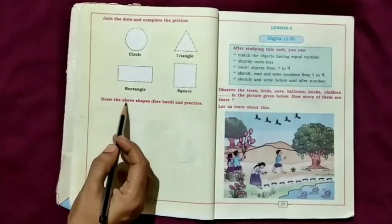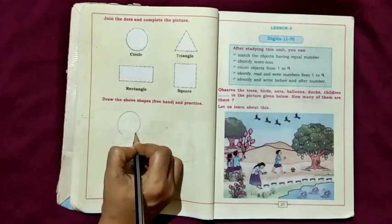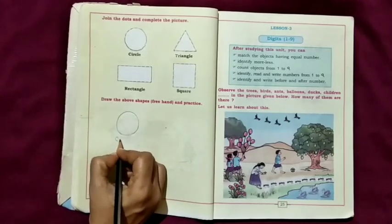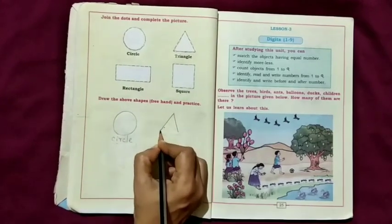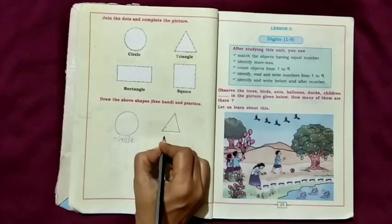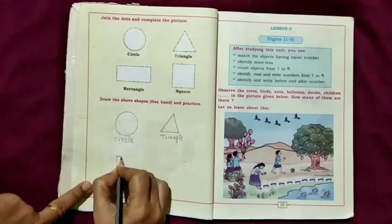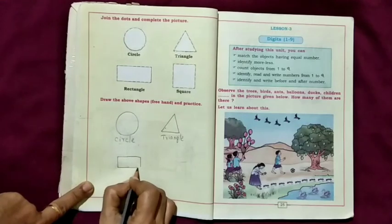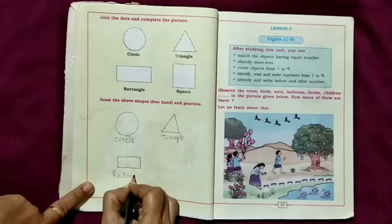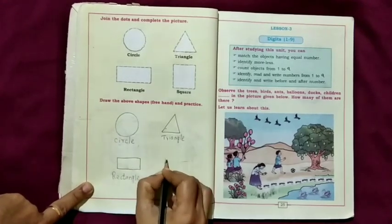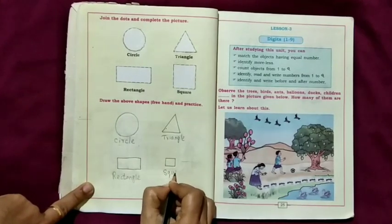Draw the above shapes freehand and practice. Practice circle, C-I-R-C-L-E. Practice triangle in your freehand. Don't take your ruler. T-R-I-A-N-G-L-E. Rectangle, R-E-C-T-A-N-G-L-E. Square, S-Q-U-A-R-E.